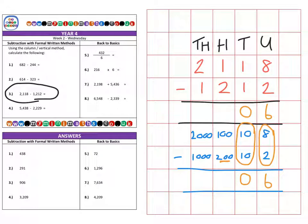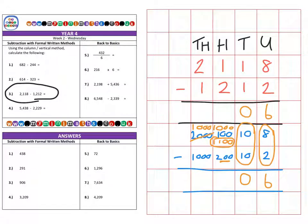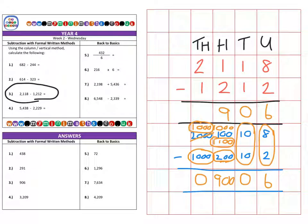The second number is too big, so I need to borrow a thousand from over here, leaving a thousand in the thousands column and bringing that extra thousand here, which gives us one thousand one hundred. So one thousand one hundred subtract two hundred gives me nine hundred. Then in the thousands column, a thousand subtract a thousand leaves me with nothing, for a final answer of nine hundred and six.